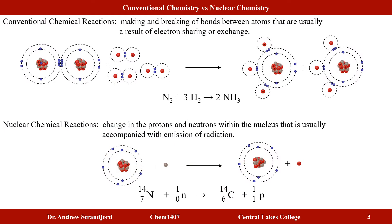Let's introduce nuclear chemistry by comparing it to a conventional chemical reaction. In a conventional chemical reaction, bonds are either made or broken between atoms, usually through electron sharing or exchange. For example, nitrogen gas reacts with hydrogen gas to form ammonia. I must break the triple bond in nitrogen and the single bonds in hydrogen, then form new covalent bonds by sharing electrons between hydrogen and nitrogen atoms.